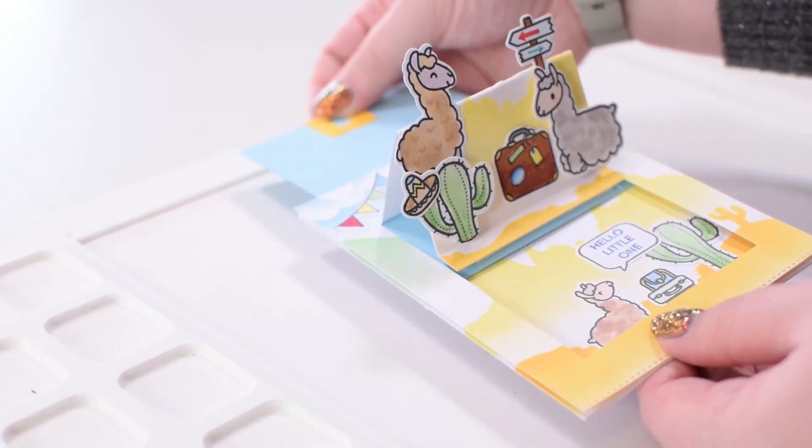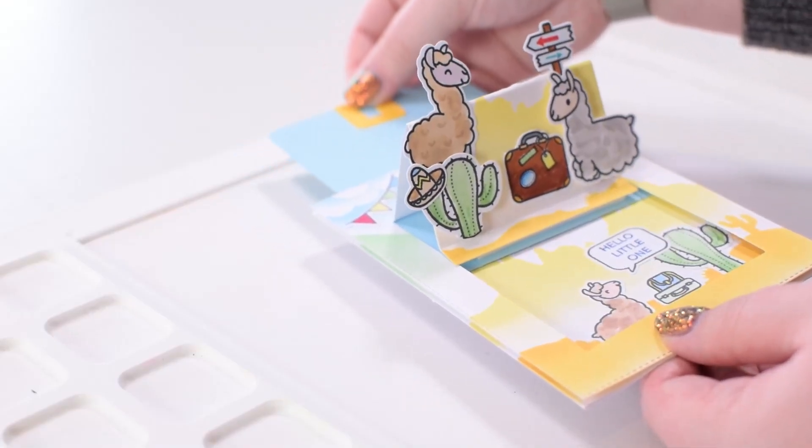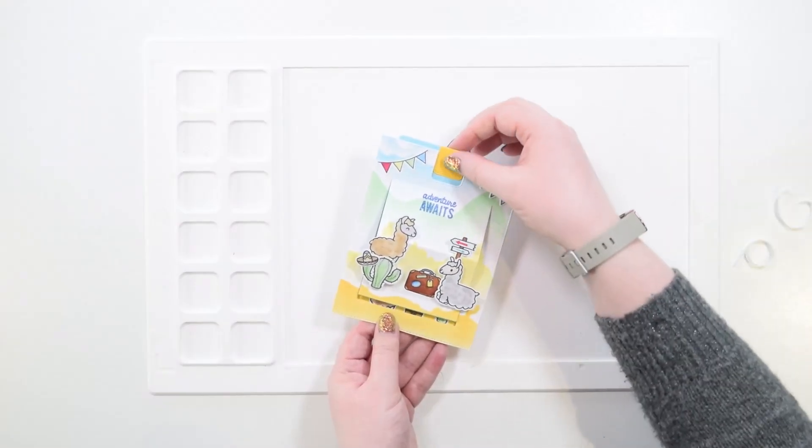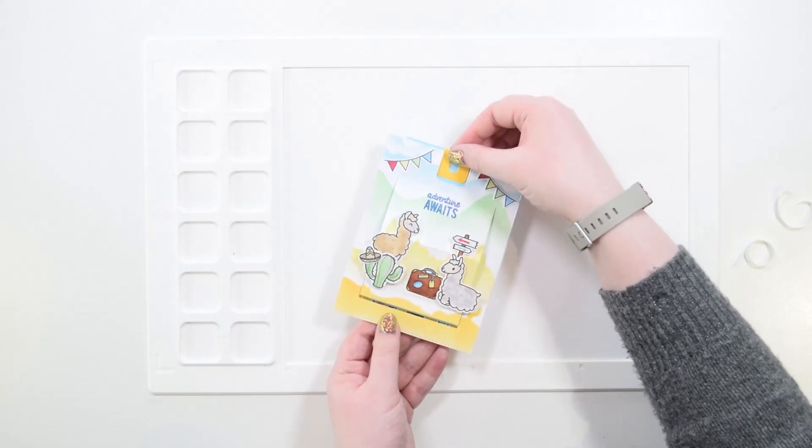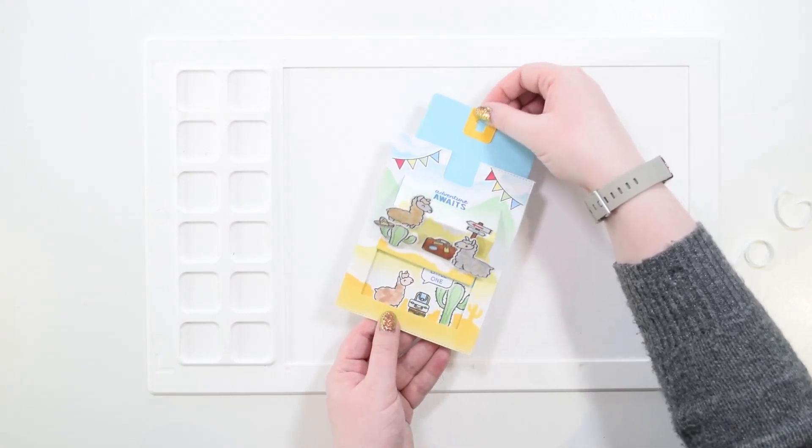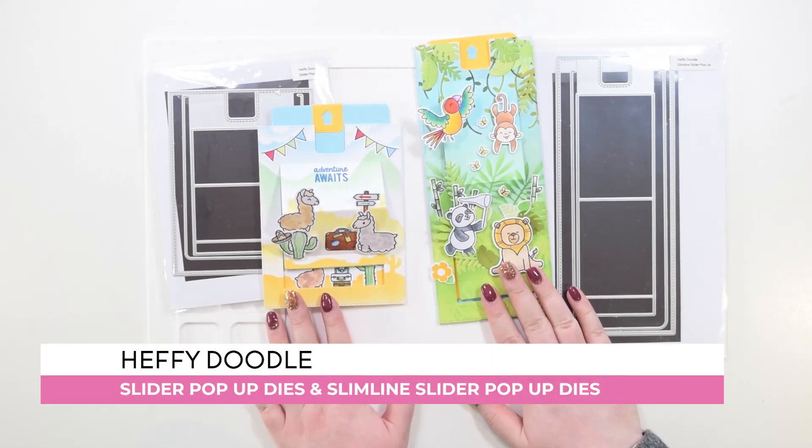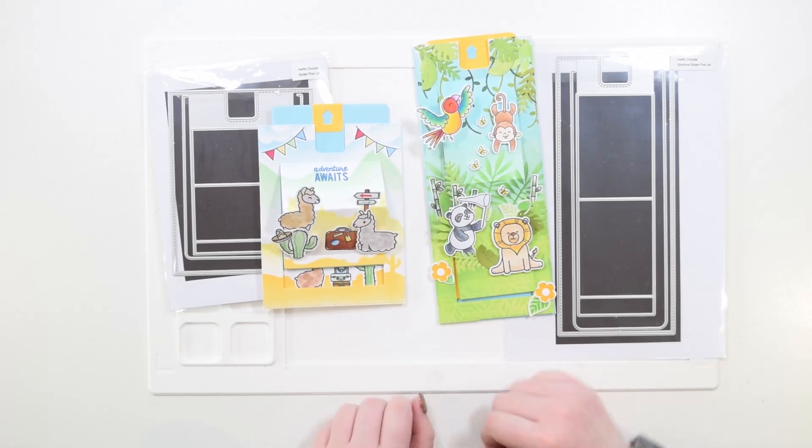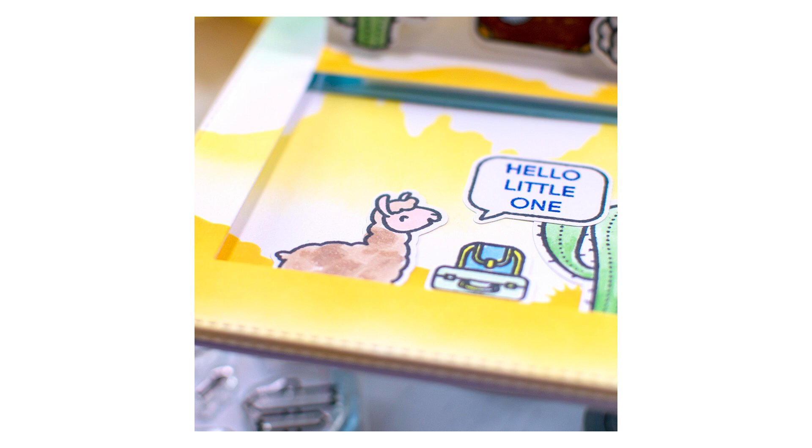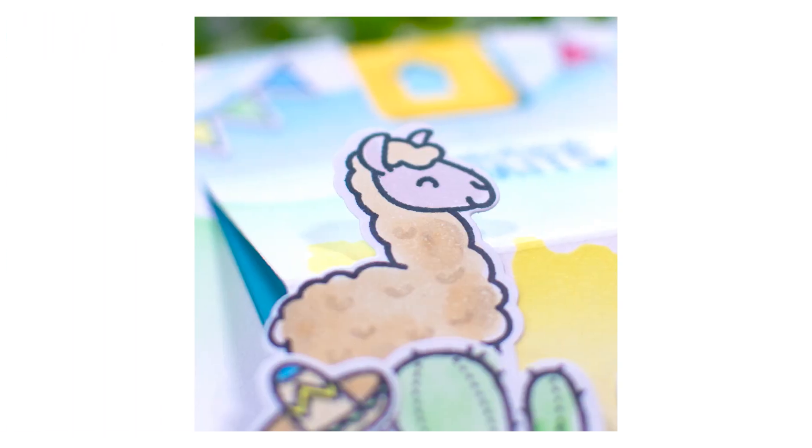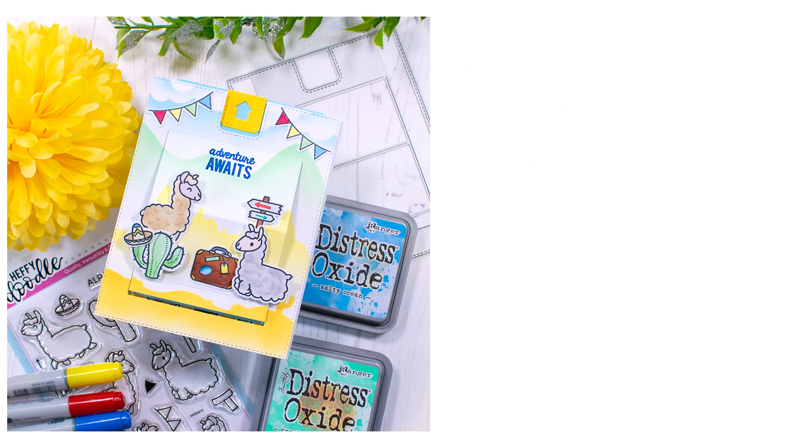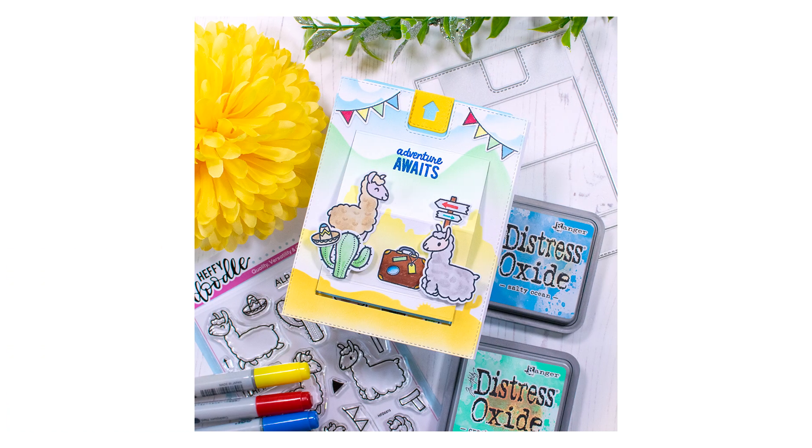And there you have it! Here is our finished slider pop-up card. I love how this one's turned out. I love the colors, I think the llamas look super cute, and I hope I've shown you how easy it is to use this die set to create your own slider pop-up cards. And if you have the slimline slider pop-up dies, you can still follow the exact same steps I've shown you in this video to create a slimline slider pop-up card. So thank you for watching. If you enjoyed this video, hit the like button and be sure to subscribe to the Heffy Doodle channel so you don't miss out on future videos. Why not check out some of these suggested videos for even more crafty inspiration? And until next time, happy crafting!